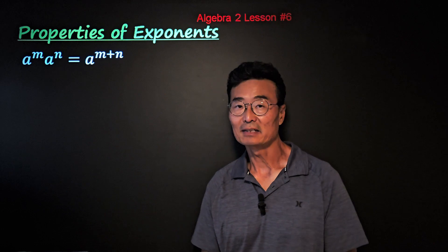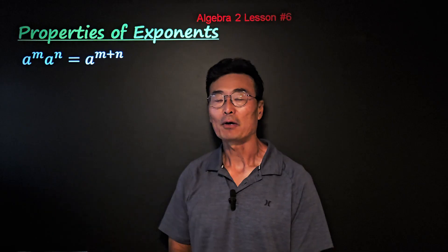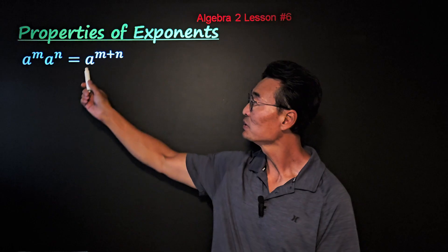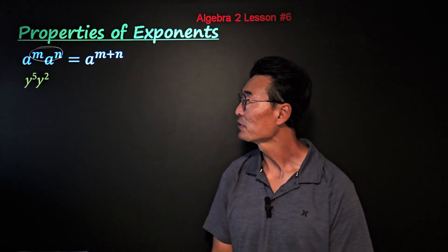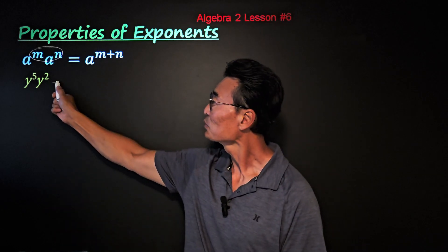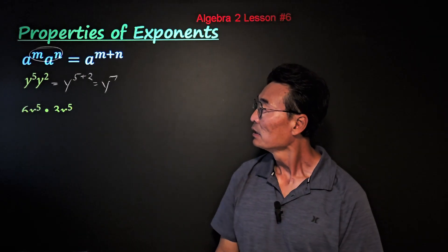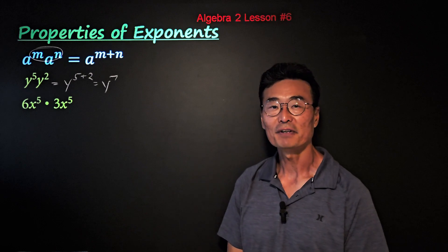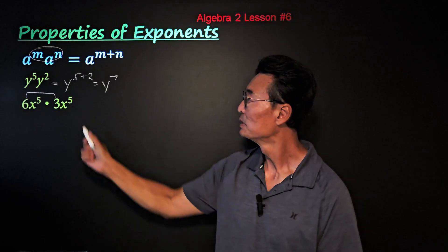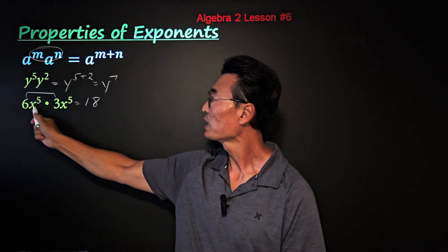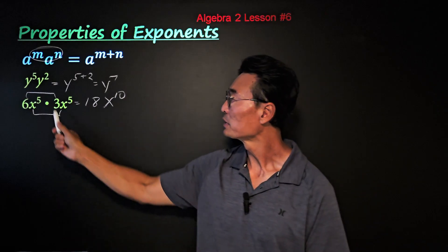Here are basic and not-so-basic properties of exponents. First, when multiplying the same base — a to the n times a to the n — you add the exponents to get a to the n plus n. For example, y to the fifth times y squared equals y to the 7th. For 6x to the fifth times 3x to the fifth, multiply the numbers first to get 18, then add the exponents on x to get x to the 10th, giving 18x to the 10th.